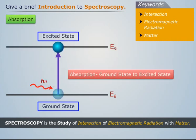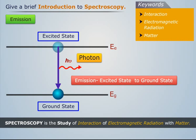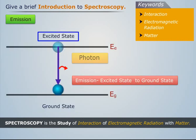Now let's discuss emission. When the atoms or molecules present in the matter jump from excited state to the ground state, they release electromagnetic radiation. This is called emission.